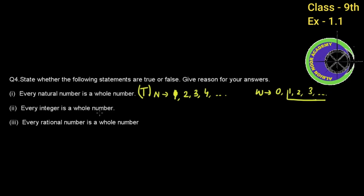Second part: All integers are whole numbers. Integers include both negative and positive numbers. But whole numbers are always positive, starting from 0. Since integers include negative numbers, which are not whole numbers, this statement is FALSE.